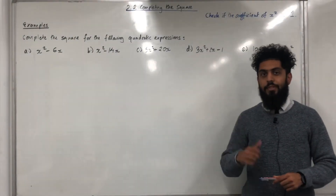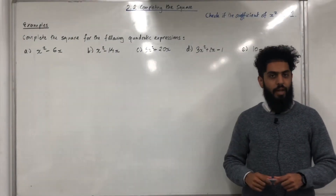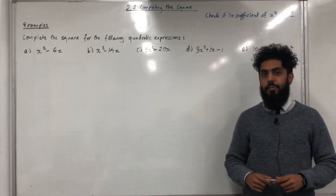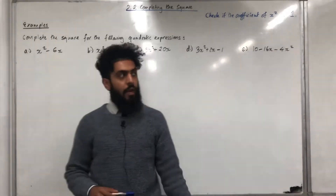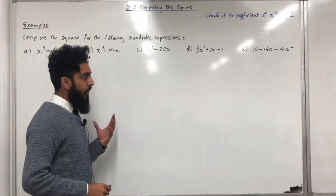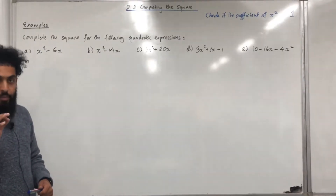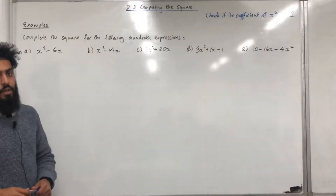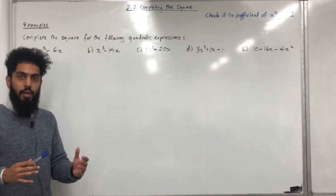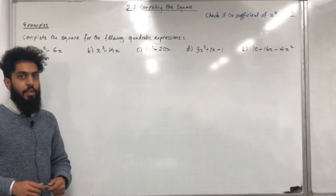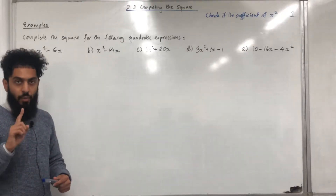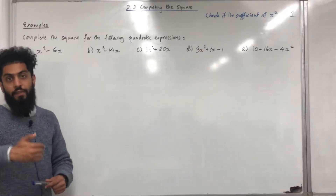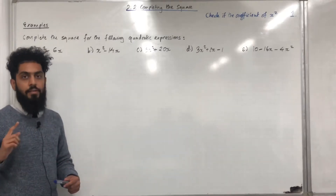In this video, I'll be looking at 2.2 completing the square, representing Chapter 2, Section 2 of the Pearson A-Level Pure Mathematics Year 1 textbook. Before looking at some examples, it is very important that you check if the coefficient of x squared is 1. If it is 1, you proceed forward and complete the square. If it is not 1, you need to first factorize and then complete the square.